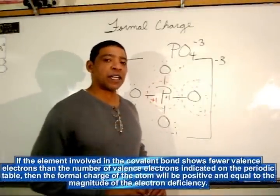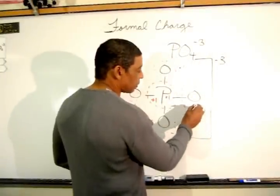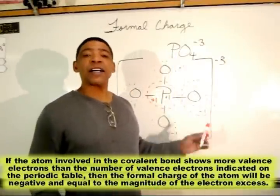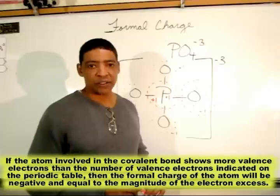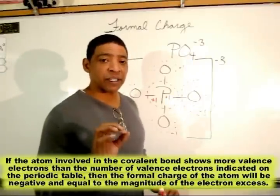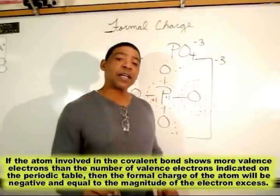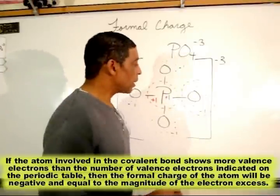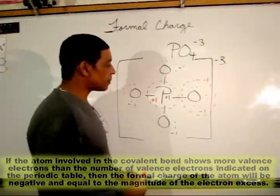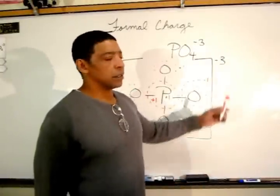For the oxygen, on the periodic table, oxygen is listed as having six valence electrons. However, in this particular molecule, oxygen possesses seven electrons within its circle. If the element shows more electrons than what is listed on the periodic table, we have an excess of negative charge, so we assign the oxygen a minus one. Adding up: plus one for phosphorus and minus one for each of the four oxygens still equals negative three, confirming our result.